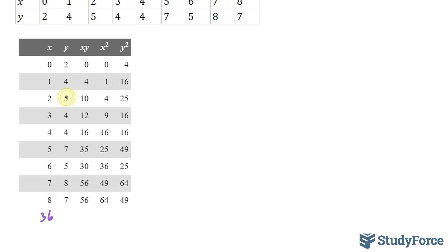2 plus 4 is 6, 11, 15, 19, 26, 31, 39, and 46.